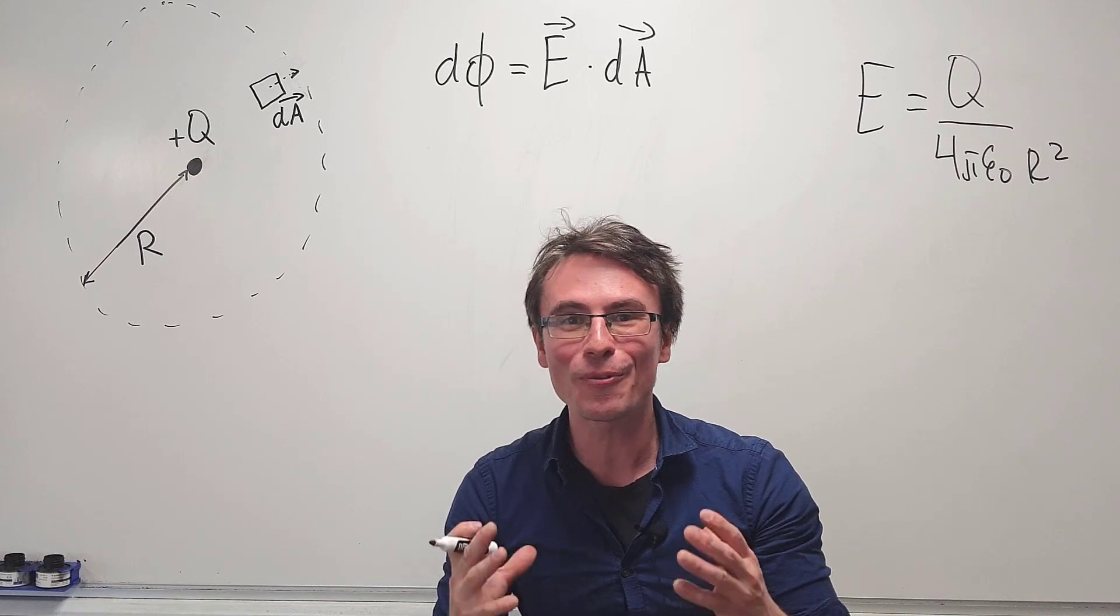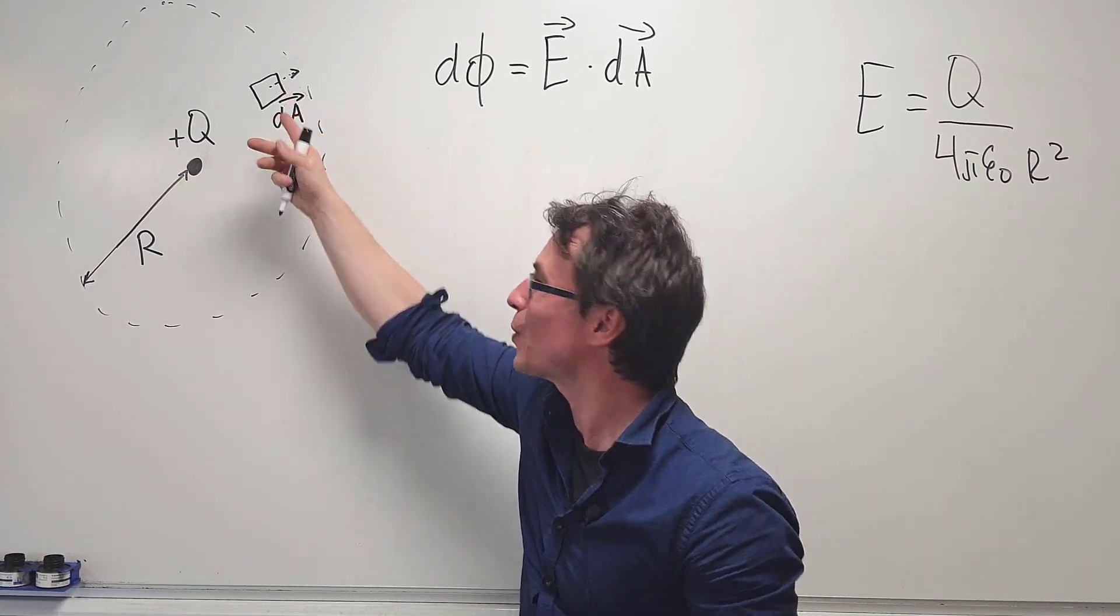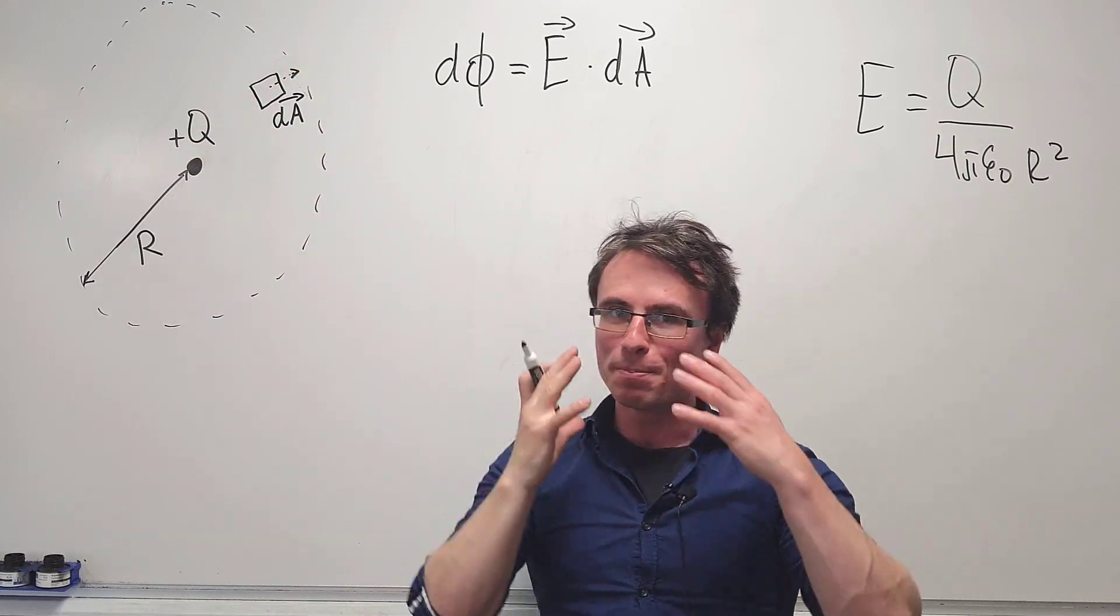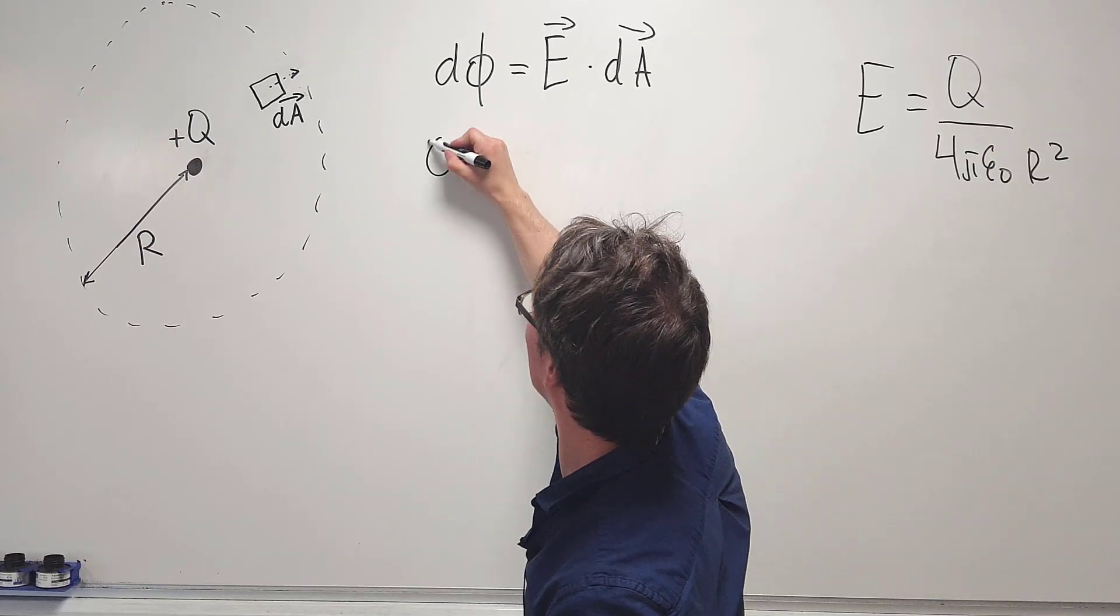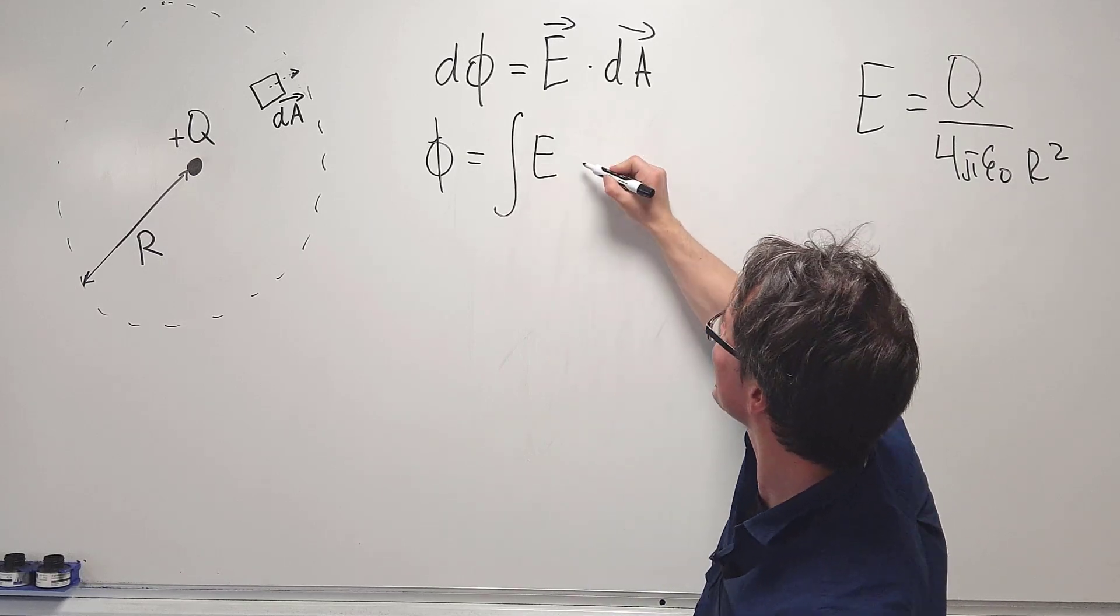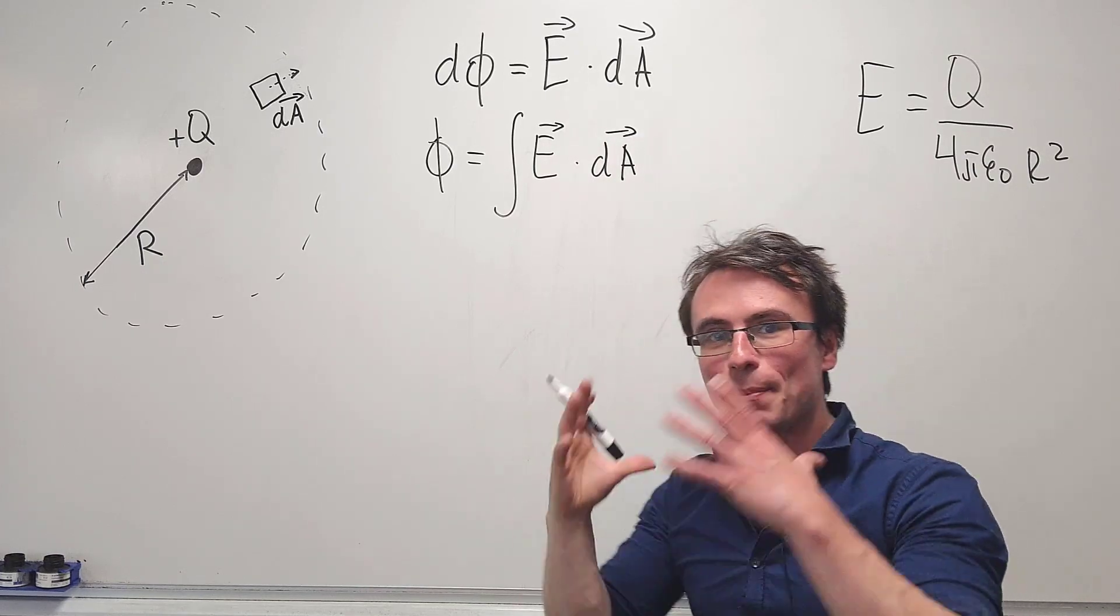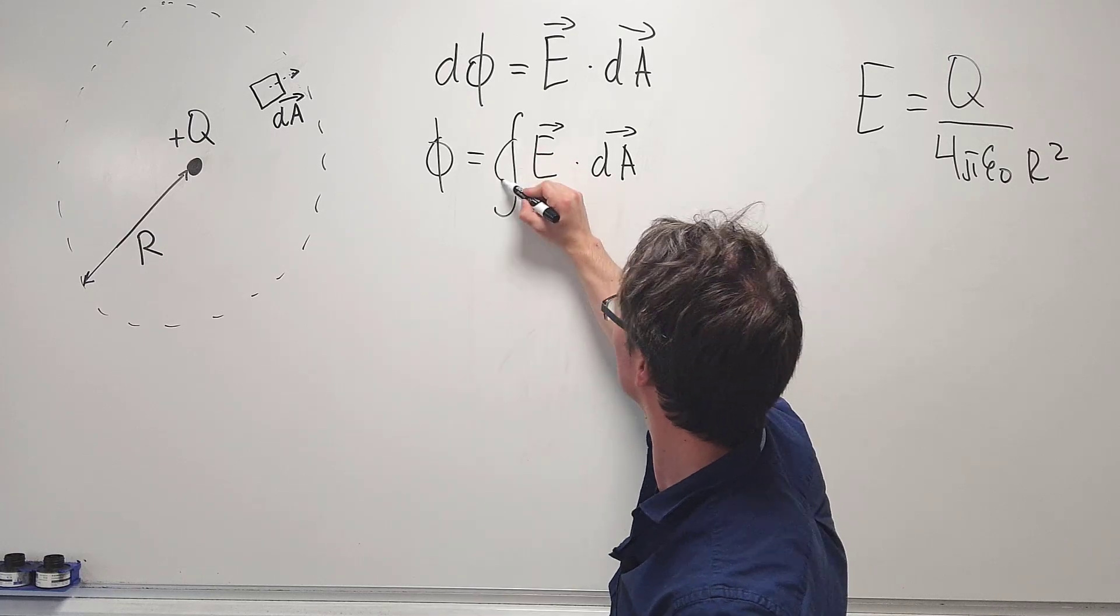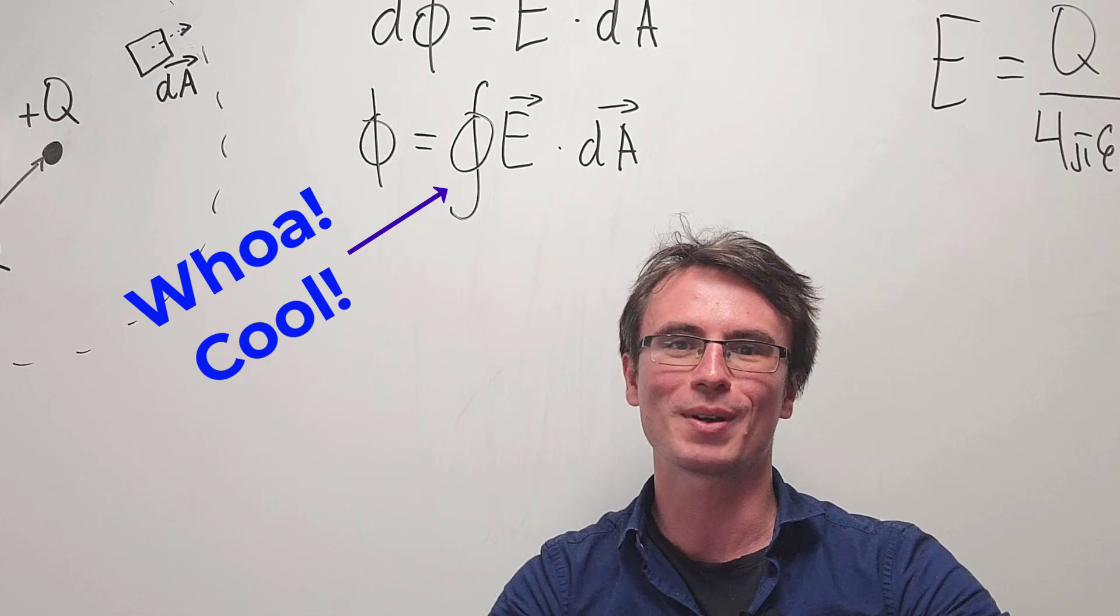To find the total flux through the sphere, I need to add up all those tiny contributions of flux across the sphere, meaning that I'm going to integrate. So the total flux Φ will be given by the integral of E dot dA, where those two are vectors. And because I'm integrating across the sphere, which is a closed surface, I'm going to add a little circle to my integral.